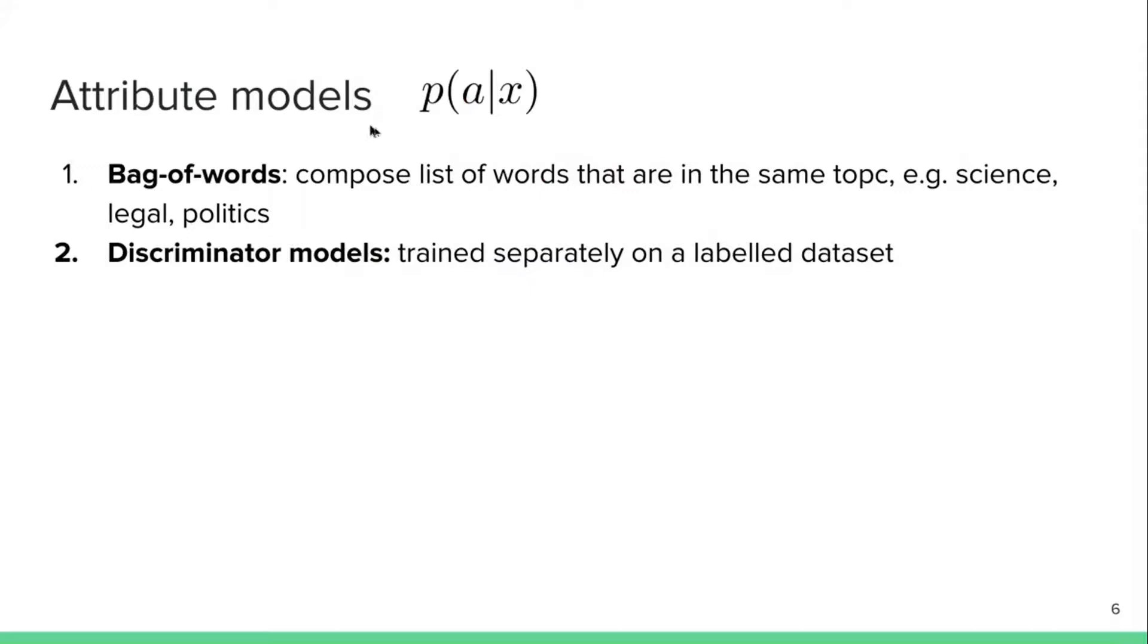To give you a bit more insight into what this p(a|x) attribute model is, they're actually mainly using two main attribute models. The first one is a bag-of-words model. Simply, they compose a list of words that are in the same topic. Let's say you have some words in science, legal, or politics. And then what they're doing is they're computing some sort of a frequency-based p(a|x). This is a very simple approach and it doesn't involve any more parameters that need to be trained.